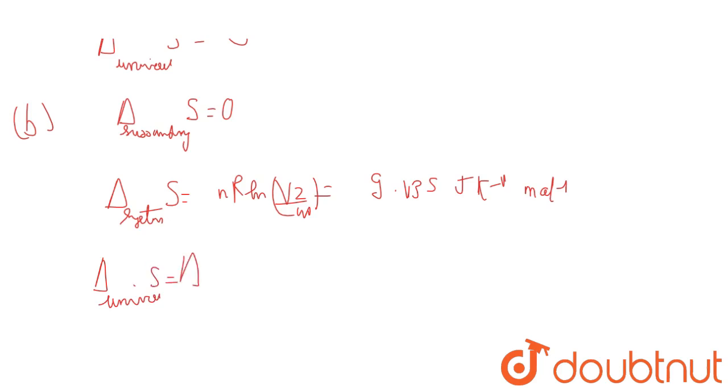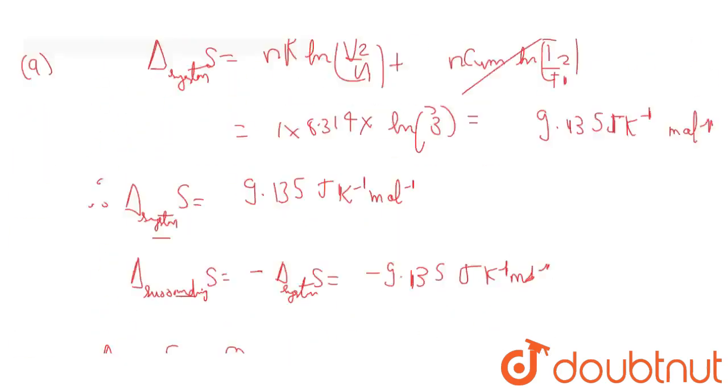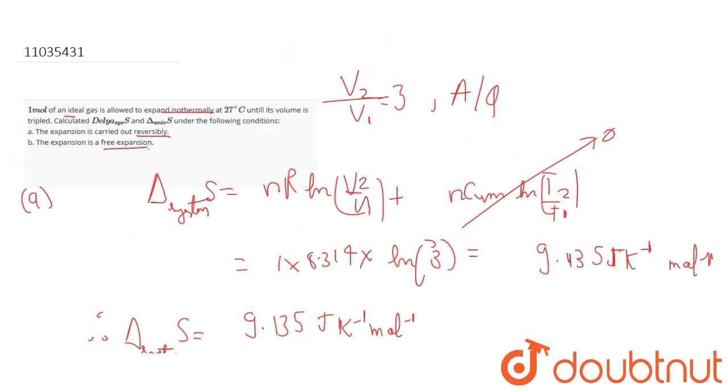Delta S of universe = delta S of system = 9.135 J K⁻¹ mol⁻¹. This is the final solution for this question.